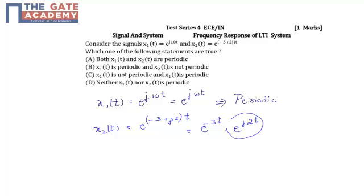Now this part is also periodic. However, this portion is a decaying exponential. So this makes the signal x₂(t) aperiodic.